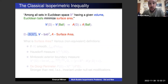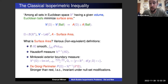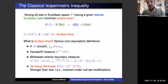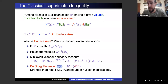By volume I mean n-dimensional Lebesgue measure. What do I mean by surface area? This deserves reflection because there are various non-equivalent definitions of surface area. When the boundary of the set is smooth, all these definitions coincide, but in general they differ. The one we're going to use is the strongest — meaning this definition gives you something smaller or equal to all other candidates. It is given by the so-called De Giorgi perimeter.